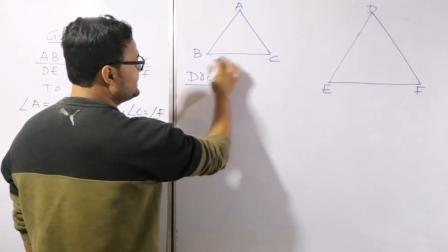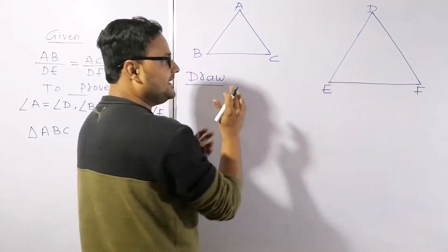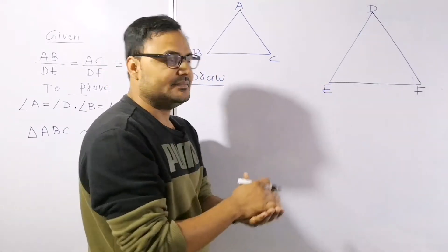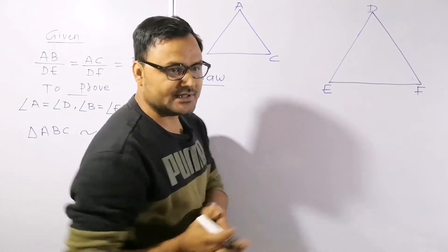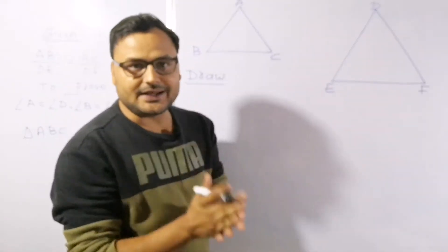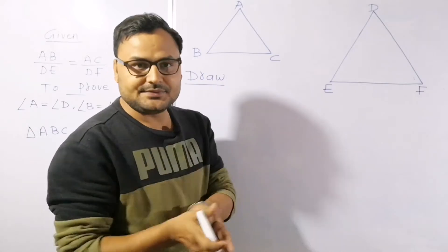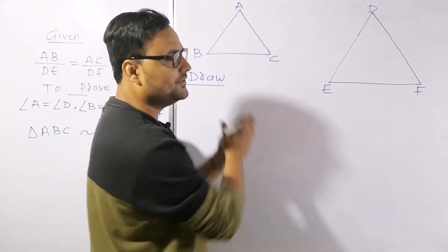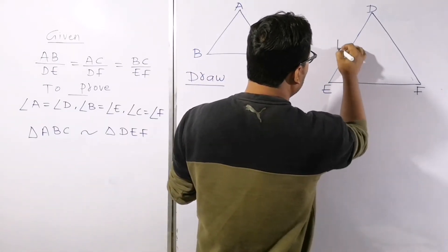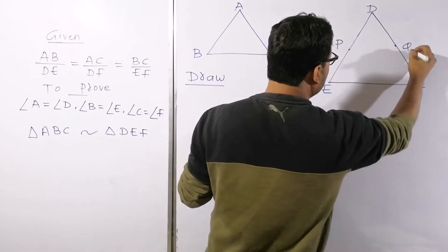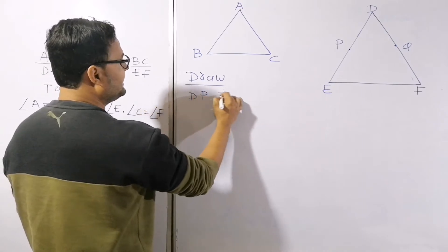Looking at triangles ABC and DEF, AB appears smaller than DF. Similar to the last theorem we did — Theorem 6.3 AAA similarity — we use the same type of construction. If you have any doubt about the last theorem, the link is in the description box. Now, what we draw: we draw points P and Q, draw DP equal to AB.